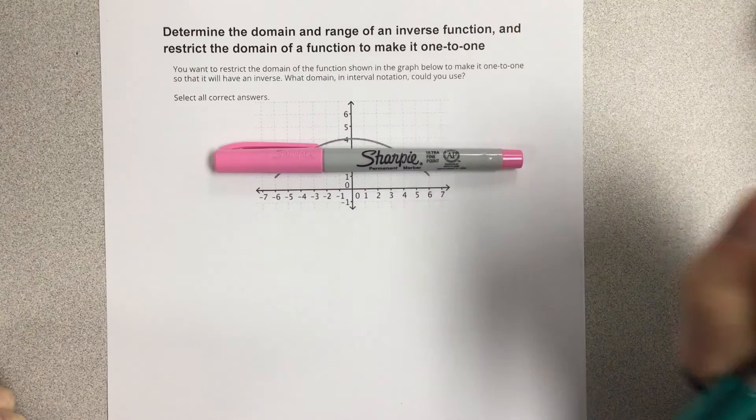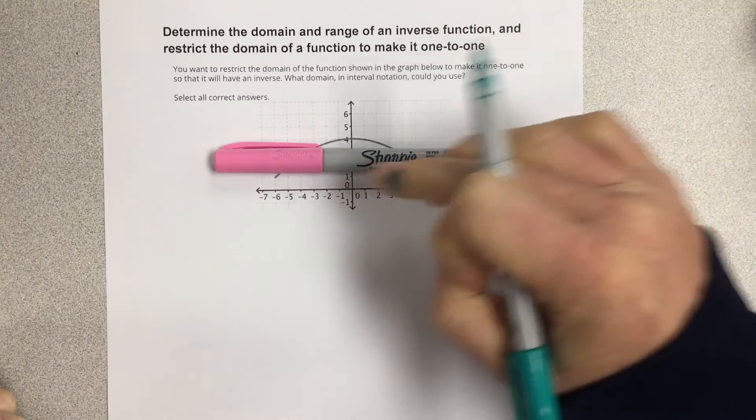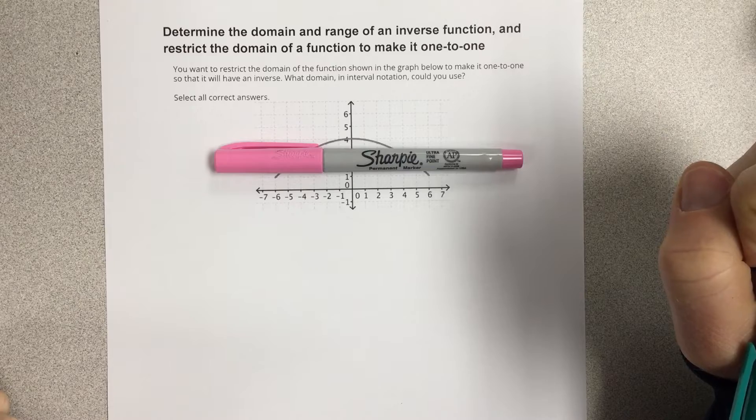You can see it doesn't pass the horizontal line test by putting the Sharpie there and it touching the line twice.